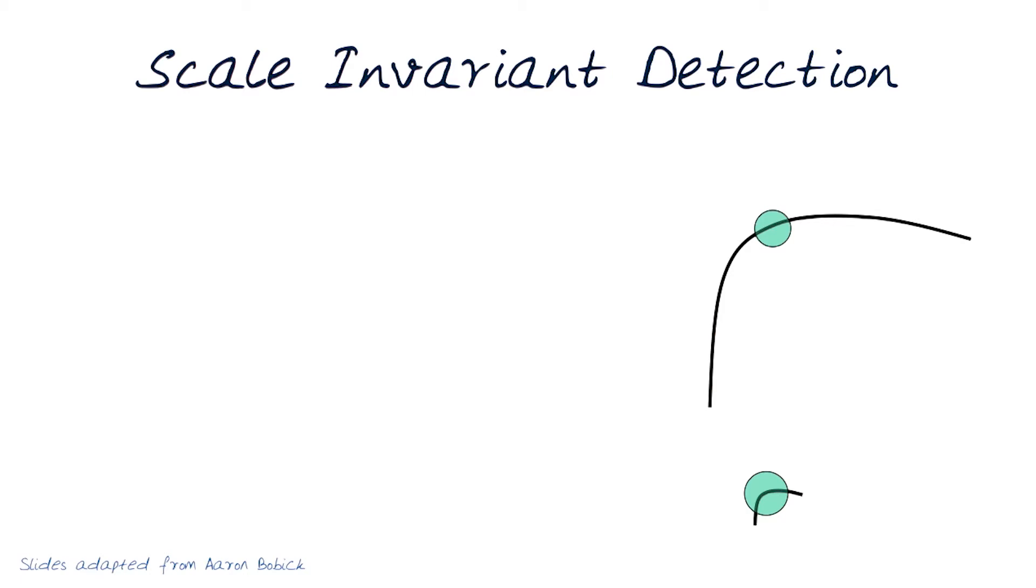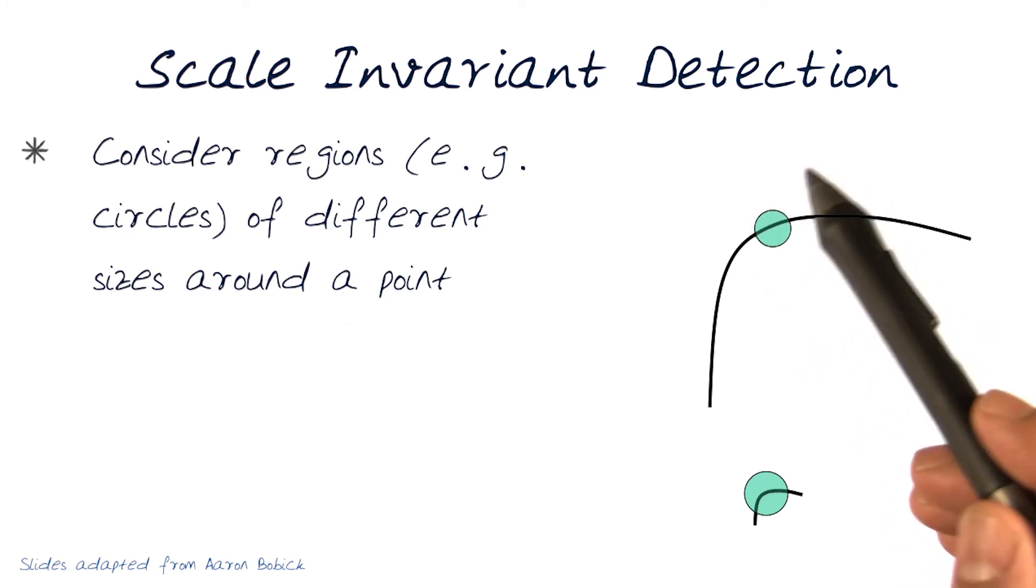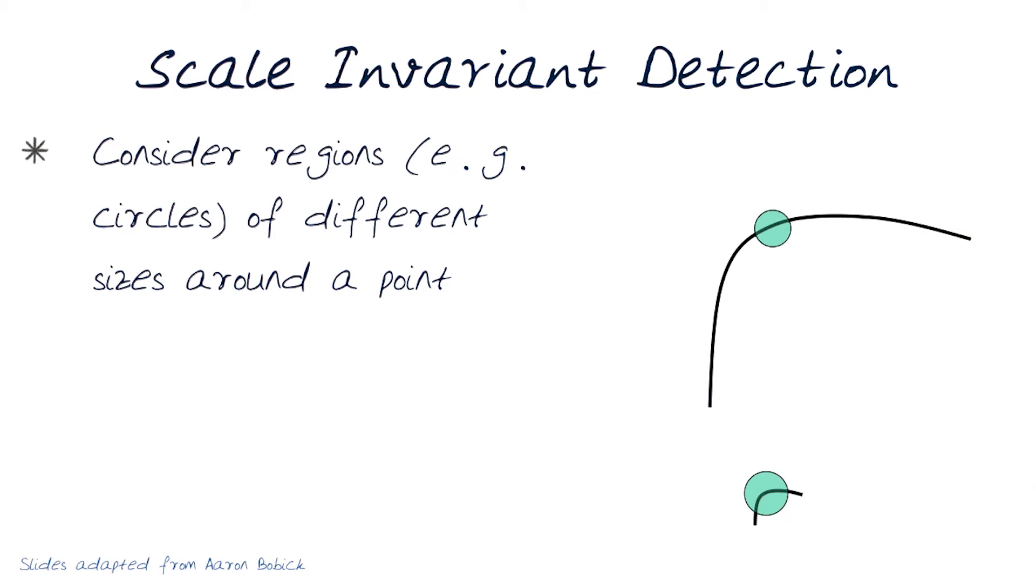So one thing I can do now is start looking at different regions. Basically, consider this region a circle, and start looking at different sizes around the same point. In essence, what I'm doing now is zooming out. I'm wanting to look at the same region but from farther away, which would make this object smaller.